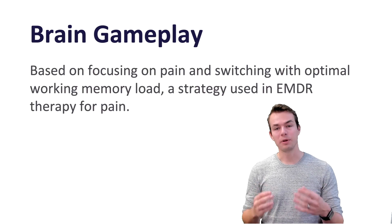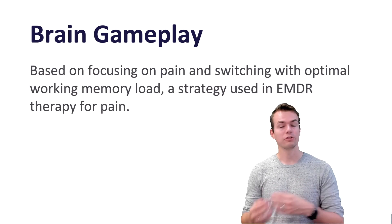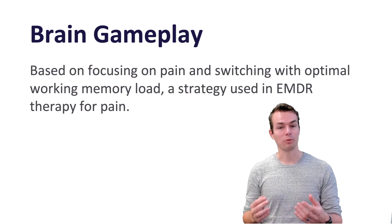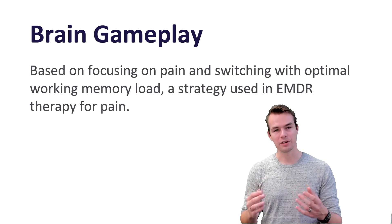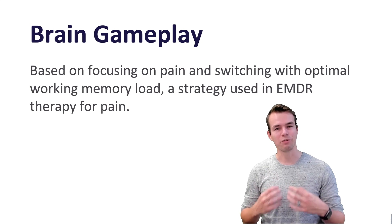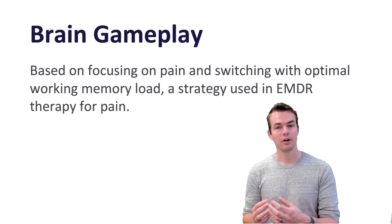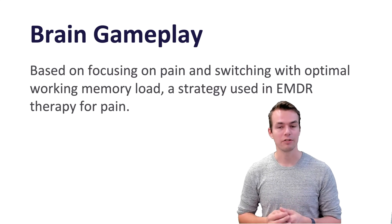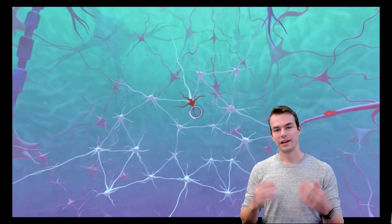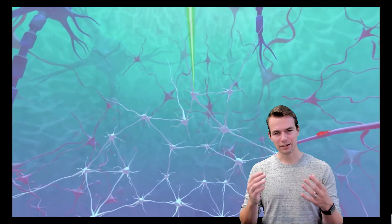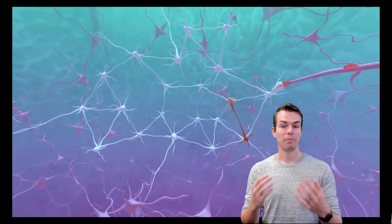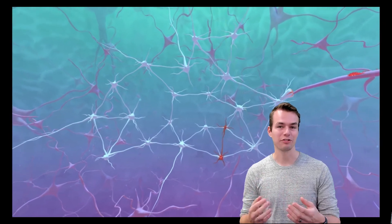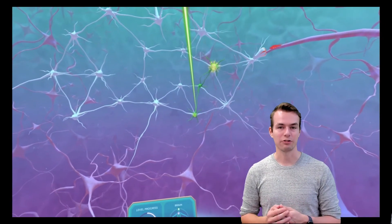Next up is the brain gameplay. People are actually traveling from the nerves through the spinal cord all towards the brain, taking the same journey as a normal signal that could create pain would. And in the brain, they're doing an exercise where they actually have to focus on their own pain and switch this with a working memory loading exercise — and this lies at the basis of current EMDR theories. As you can see in this example of the gameplay, people actively have to remember the pattern they see in the brain. They learn how the brain works and they learn how to desensitize their own brain by doing this type of exercise.